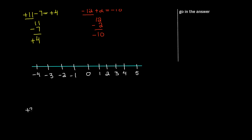Let's say we have the problem positive 3 minus 2. We're going to start at the point of positive 3, then subtract 2 by going back two spaces. From positive 3, one space, second space — we land on 1. So positive 3 minus 2 is equal to 1. I started on positive 3 and went back two spaces. That's what's really happening behind the scenes.